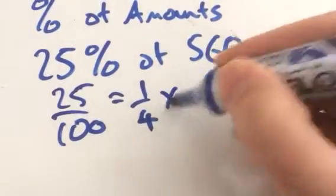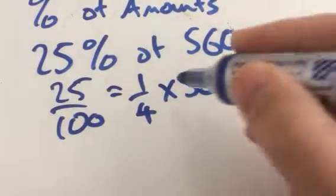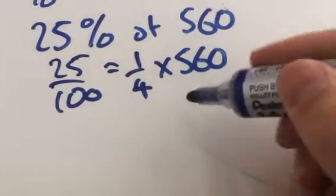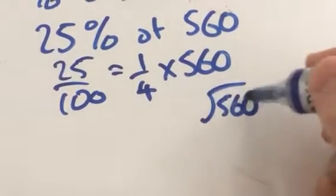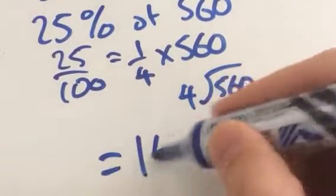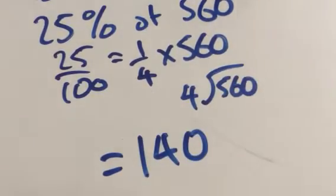Times 560. So we've got that quarter of 560, and that equals 140. Because if we were to do your bus stop or use your calculator, 560 divided by 4 would be 140. Excellent.